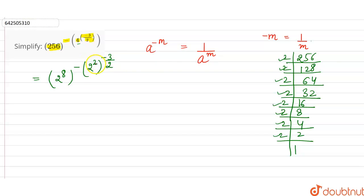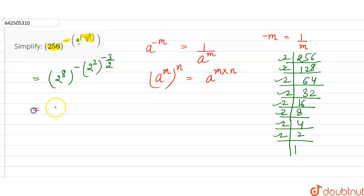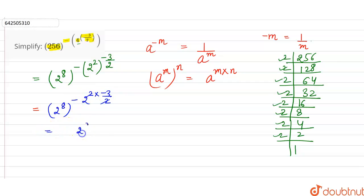Now, another law of exponents says that if a raised to the power m, whole raised to the power n, we can multiply the powers — so this equals a raised to the power m into n. Applying this, we get 2 raised to the power 8, and separately 2 raised to the power 2 into minus 3 by 2. The 2s cancel, giving 2 raised to the power 8 into 2 raised to the power minus 3.